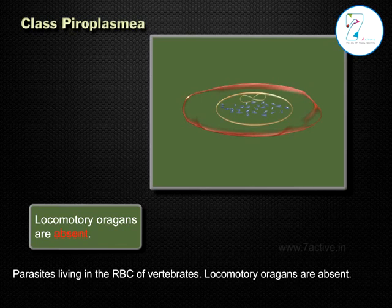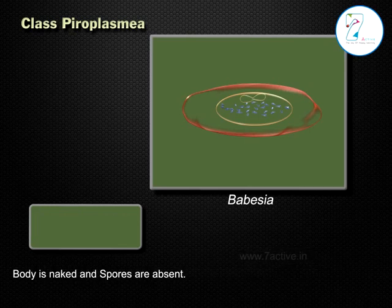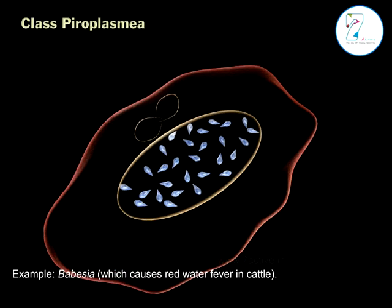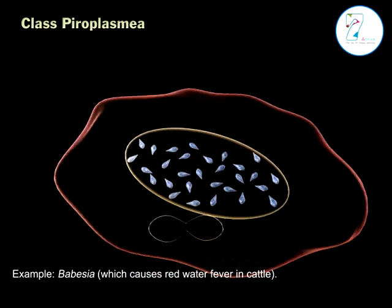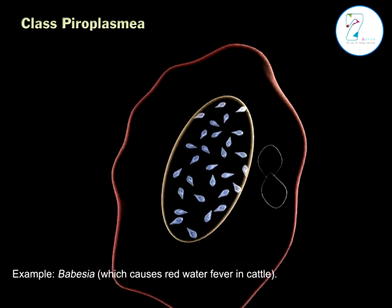Class 2 Pyroplasma: parasites living in the red blood cells of vertebrates. Locomotory organs are absent, body is naked, and spores are absent. Example: Babesia, which causes red water fever in cattle.